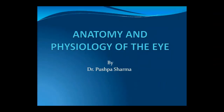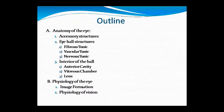This is our next class of anatomy and physiology in which we will study the anatomy and physiology of the eye. In our previous class we studied the anatomy of the eye. Today we will study the eye with both anatomy and physiology. We will study the eyeball which includes the fibrous tunic, vascular tunic, and nervous tunic.